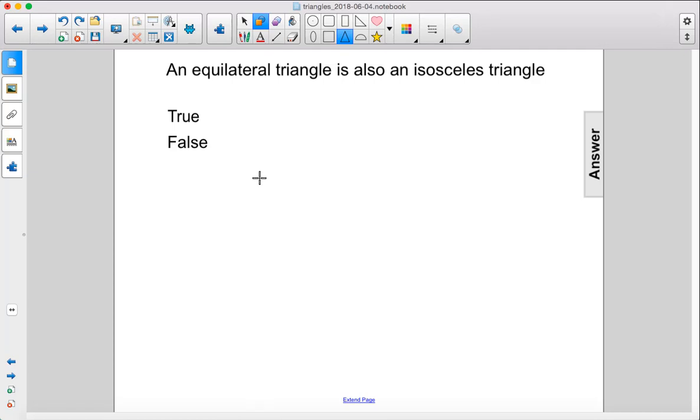An equilateral triangle is also an isosceles triangle. This is true.